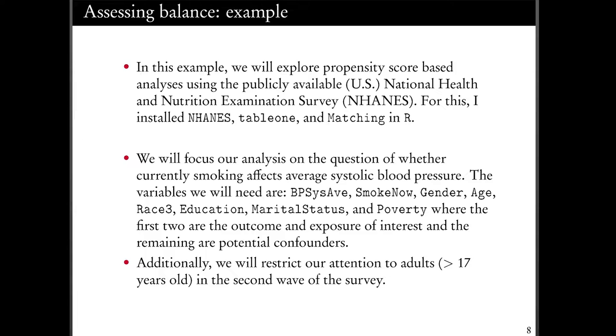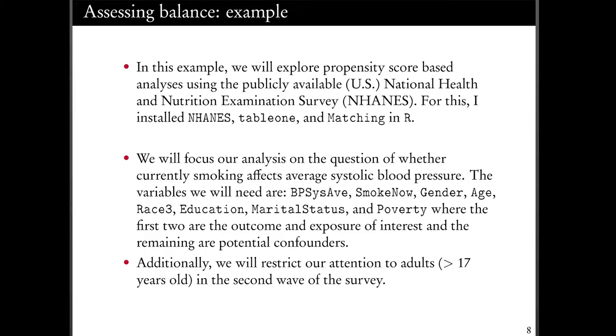I'm going to focus on the question of whether current smoking affects average systolic blood pressure. It's not a very exciting question, but we probably have some idea of what we expect the answer to be. The variables I'll look at are: BPXSAR (average systolic blood pressure, averaged over three days), current smoking (smoke now), gender, age, race, education, marital status, and poverty as potential confounders. I've also included household income as an indicator of socioeconomic status, but I won't present balance statistics for that one simply because it makes the tables too big. I'm restricting attention to adults over 17.